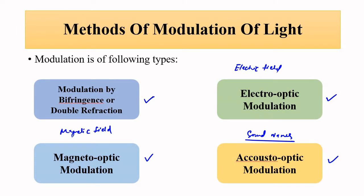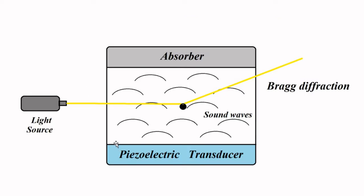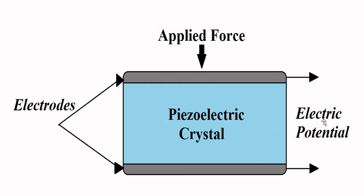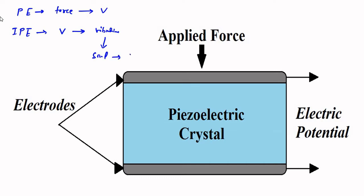The basic setup of the acousto-optic modulator involves a piezoelectric transducer to produce the sound wave. It operates on the principle of the inverse piezoelectric effect. In a piezoelectric material, when we apply pressure across the two ends it develops an electric potential — that is the piezoelectric effect. The inverse is also true: if we apply an electric potential, it will produce vibrations or oscillations across the two ends, producing sound of a suitable frequency.